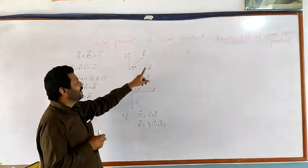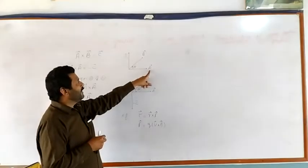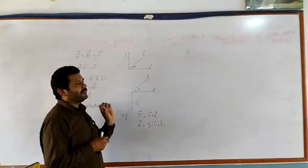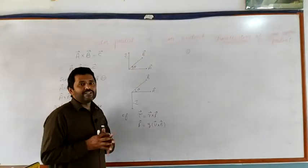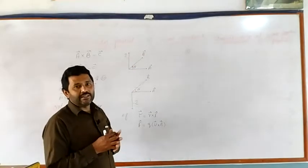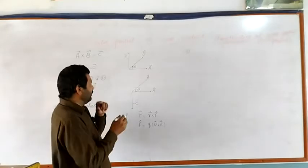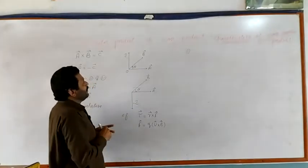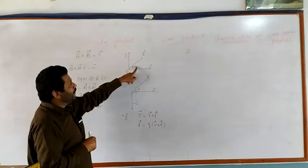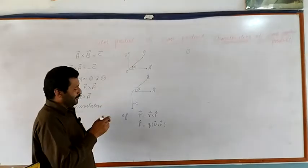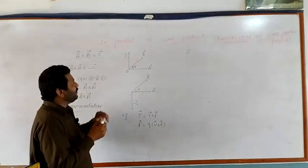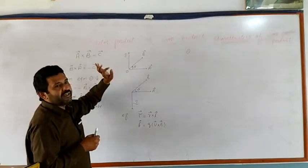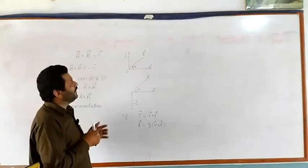Graphically, we have supposed two vectors, Vector A and Vector B which are to be multiplied. First of all, we will join the tail of these two vectors. The angle theta is the angle between these two vectors. The resultant will be equal to C, which will be defined by the right-hand rule.